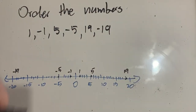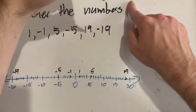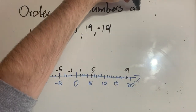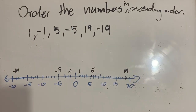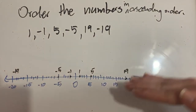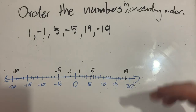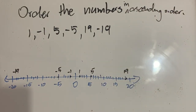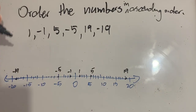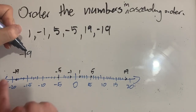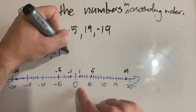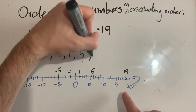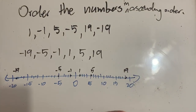I should specify that I want to order these numbers in ascending order — sorry about that. Ascending order means getting bigger; descending is getting smaller. Imagine a plane taking off — that's ascending; a plane landing is descending. So ordering from smallest to largest, we start with negative 19, then negative five, then negative one, then one, then five, and finally 19. Problem solved.